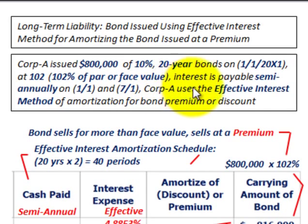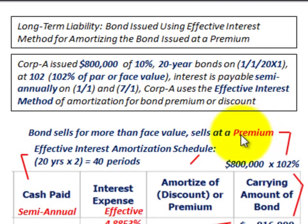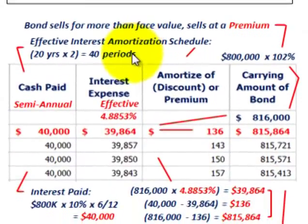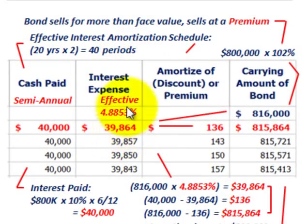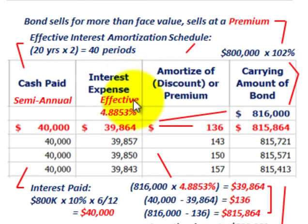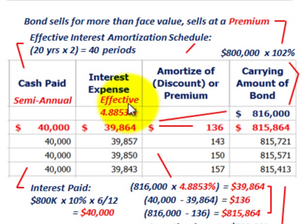Corporation A uses the effective interest method for amortization of the bond — either a premium or a discount. What we're going to be looking at is a premium, and we have to set up this amortization schedule based on the effective interest rate that we have to determine. We're going to determine that using either a financial calculator or the Excel function.